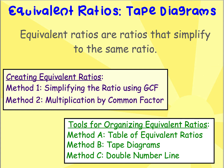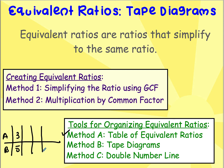We've already learned the first method: a table of equivalent ratios. If we take the ratio 3 to 5, we can find equivalent ratios by adding 3 to the first value and 5 to the second each time — giving us 3, 6, 9 and 5, 10, 15 — or we can multiply, like 3 times 10 and 5 times 10.